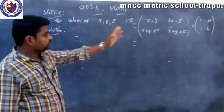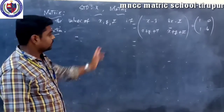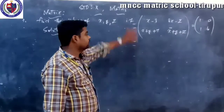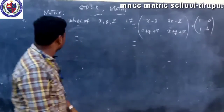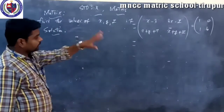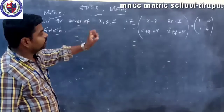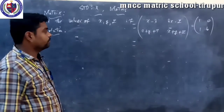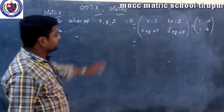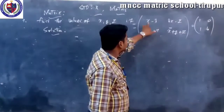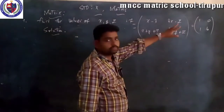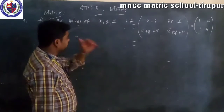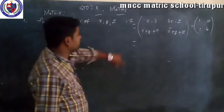So this element is equal to both sides. Compare the value of x plus y plus z with the value of 1. First of all, compare the value of x minus 3 to the right side of 1, then 3x minus z.